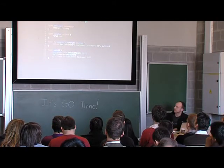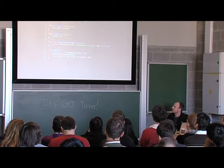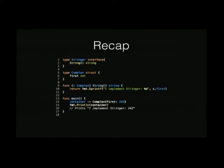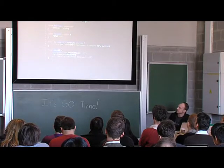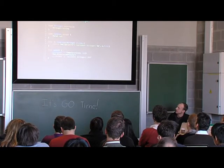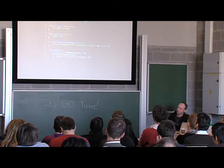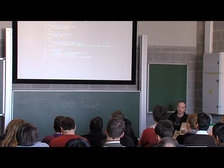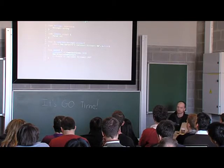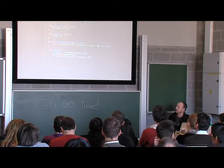Just to recap, for those of you that don't use Go all the time: this is a very simple interface called Stringer. It has one method which takes no arguments and returns a string. We have a struct type Complex, and we have the String method defined with the receiver of type Complex. When you call fmt.Println and pass a value of type Complex, it will print that format string. Stringer is used all over the standard library — probably 50 types at least implement it.